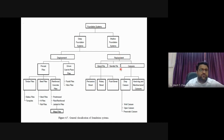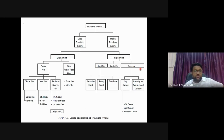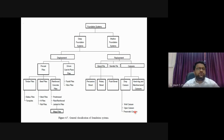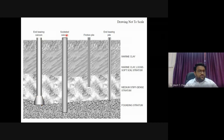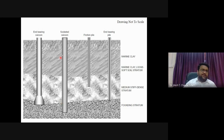Barrette piles will be discussed in the finite element analysis section. Caisson foundations are well foundations - like those used for the Taj Mahal. In pneumatic caissons, workers can go to the bottom to do work. A large diameter pile socketed into rock is called a socketed caisson - we drill a hole in the rock and grip the pile inside it like screwing it in.